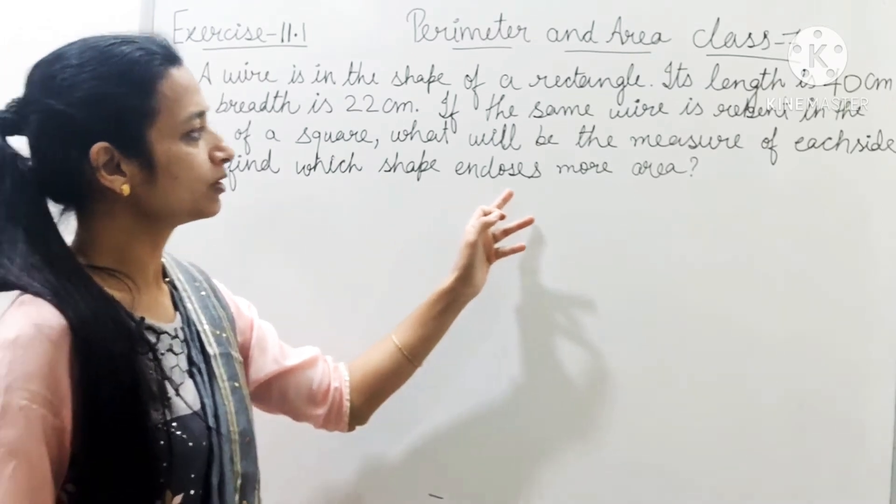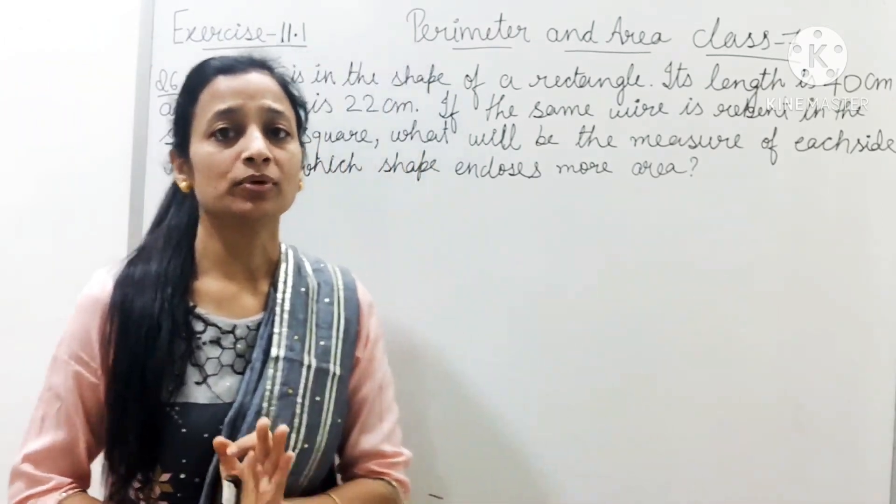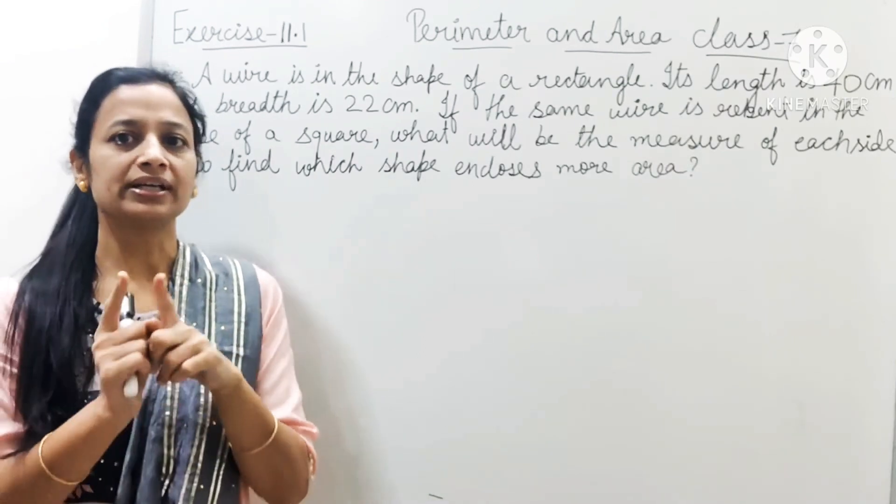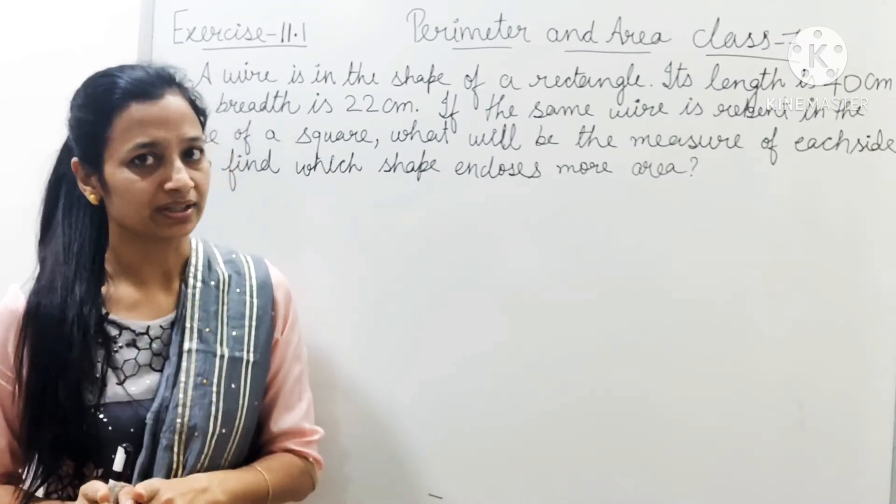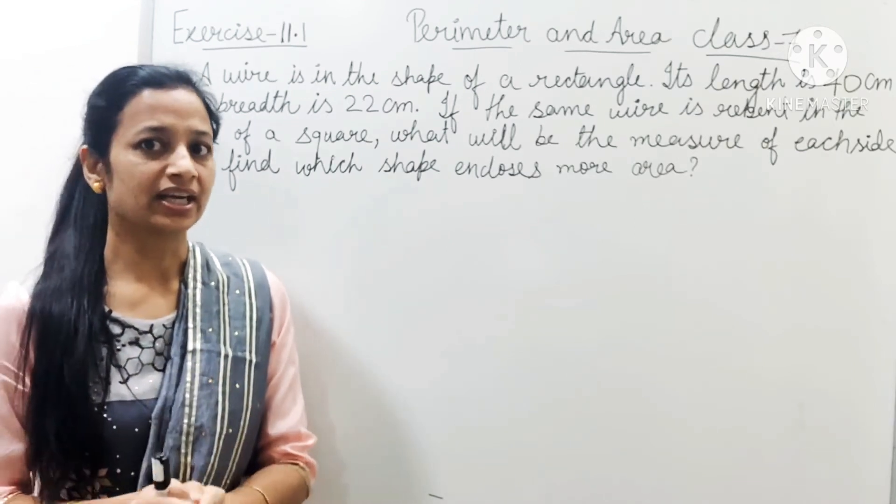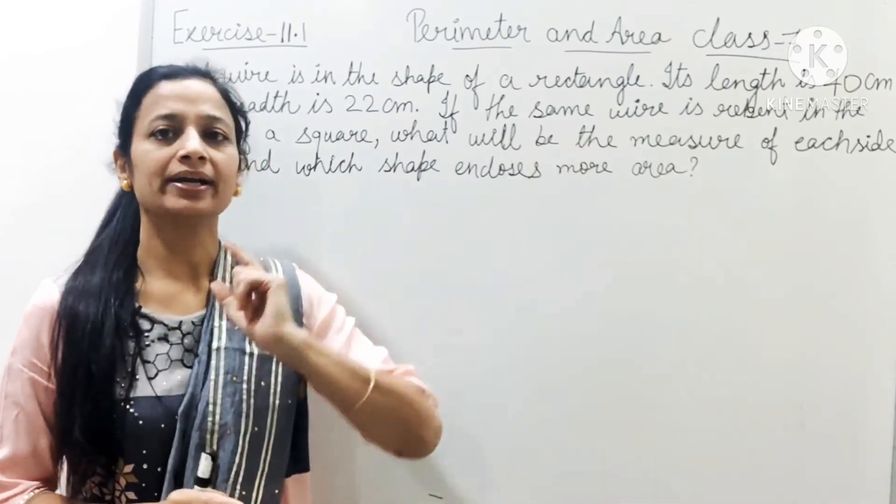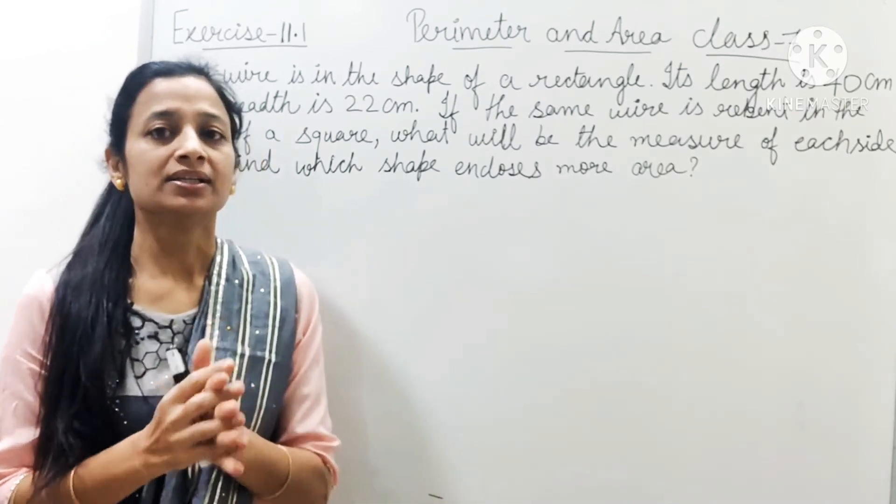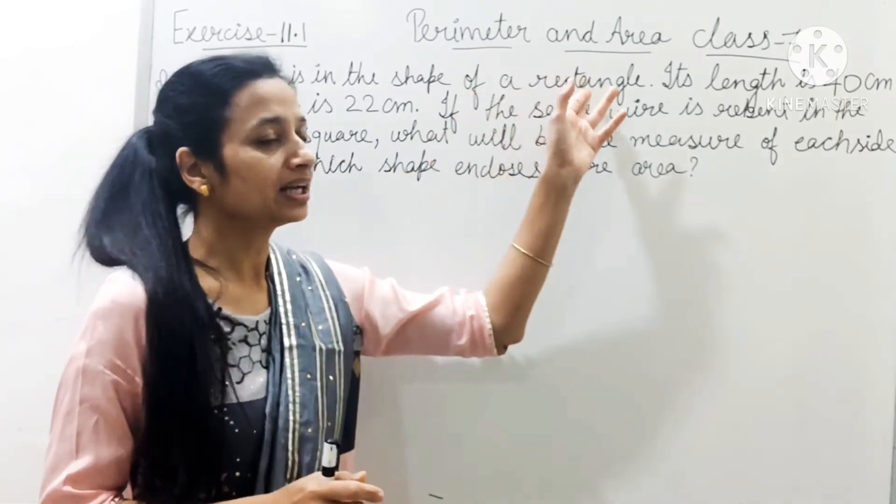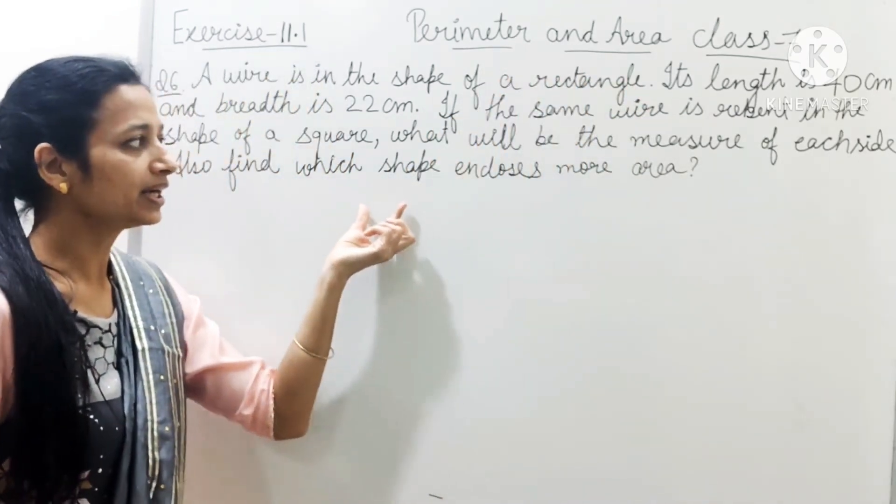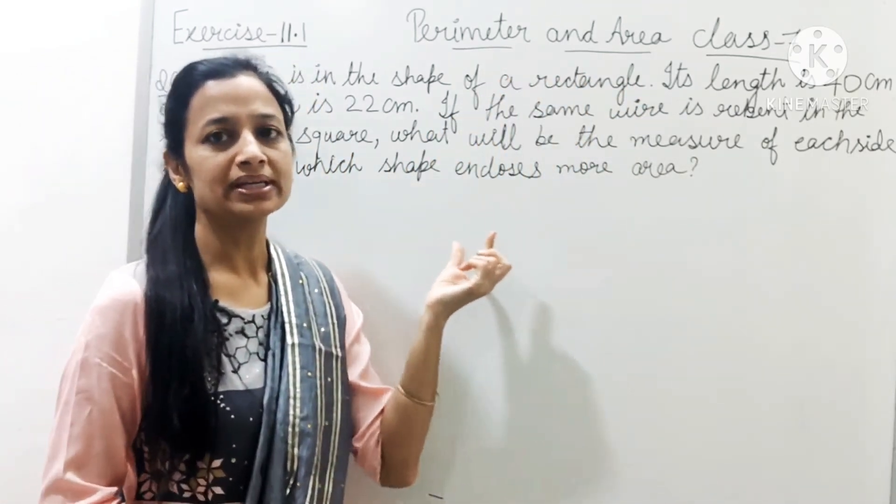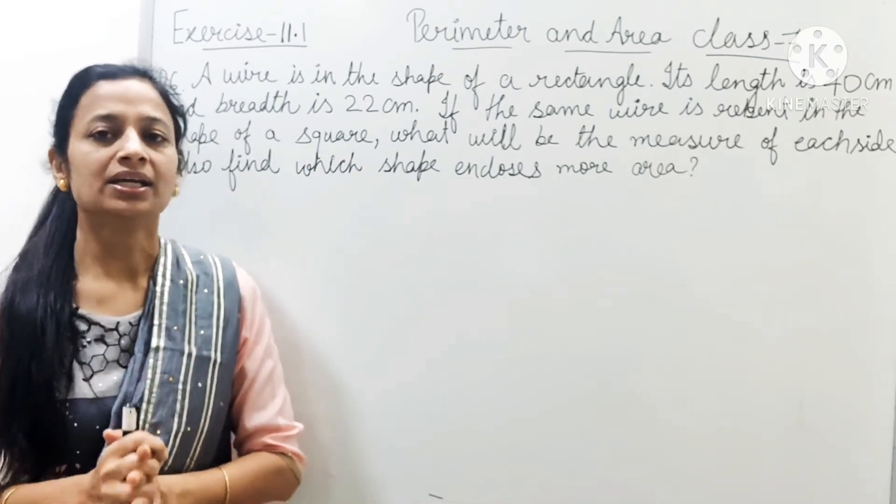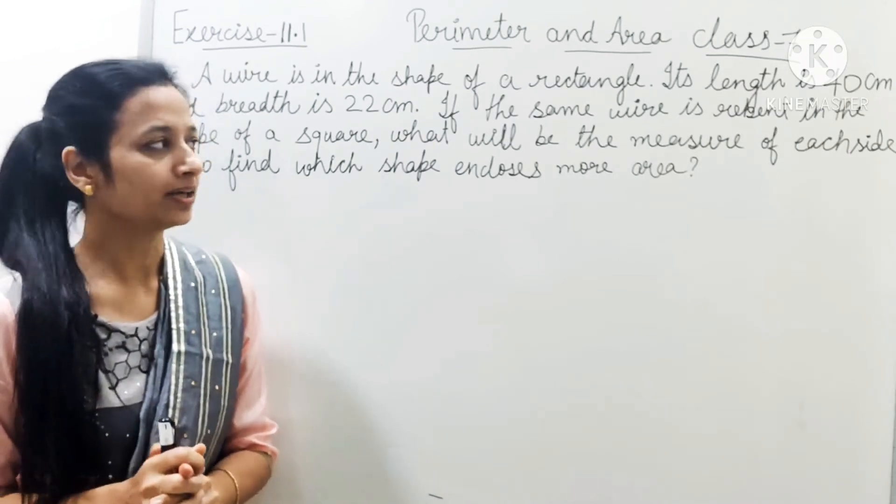You are given that a wire is a rectangle with length and breadth. Then same wire is re-bent in the shape of a square and the side you have to find. Then you find the rectangle area and the square area and in the two areas which is bigger, you have to find.